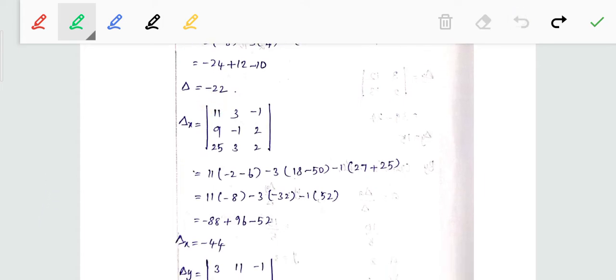minus 8 into 11 is minus 88, minus 32 into minus 3 is plus 96, 27, 25 into 52, 52 into minus 1 is minus 52. Minus 88, minus 52 is minus 140, plus 96, so minus 44.